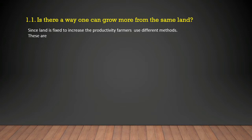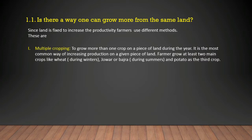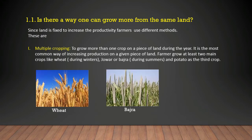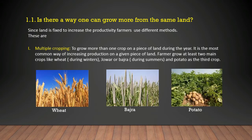The first method is multiple cropping. To grow more than one crop on a piece of land during the year is called multiple cropping. It is the most common way of increasing production on a given piece of land. Farmers grow at least two main crops — wheat during winters, jowar or bajra during summers — and potato as the third crop. So on a single piece of land in three different seasons, farmers try to grow three different crops.